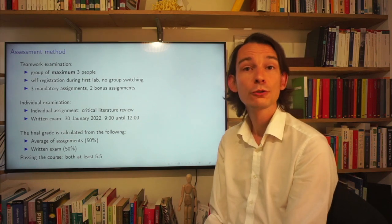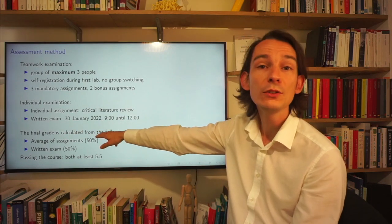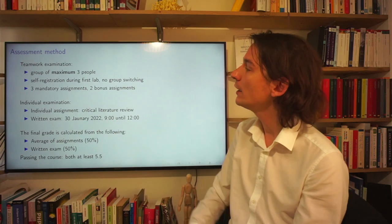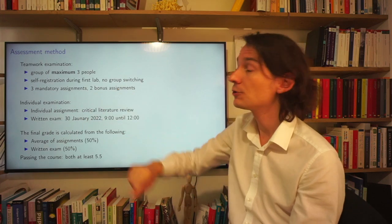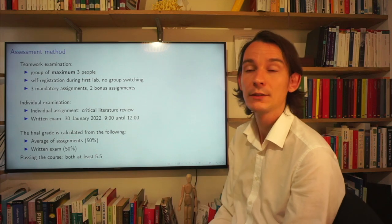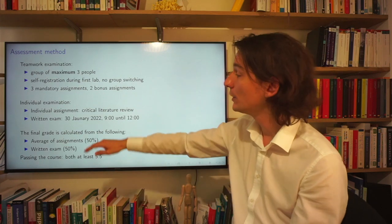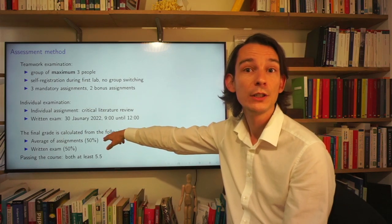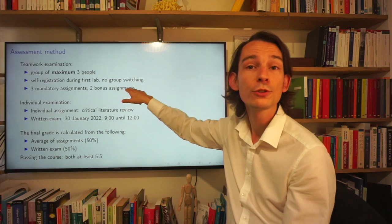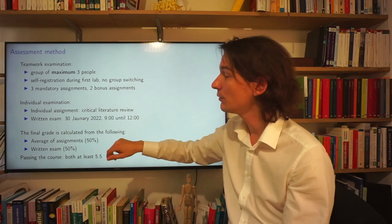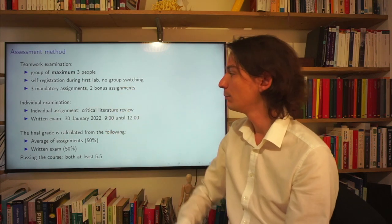The grade for this course is calculated as follows. You take the average of the assignments, of the mandatory assignments, I should say. So, those are the three mandatory assignments that you make as a group, plus your individual assignment grade, and then averaging it. The bonus assignments each allow you to get an additional point on this category of the calculation. So, if you successfully complete one bonus assignment, you get an additional point for your assignments. If you complete two bonus assignments successfully, you get two points extra.